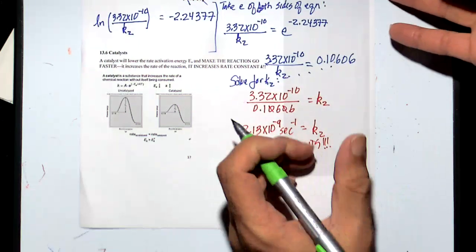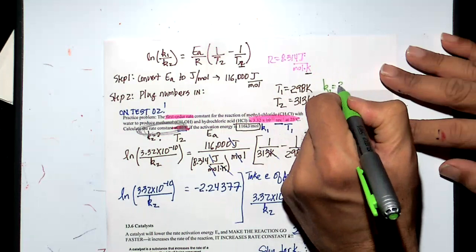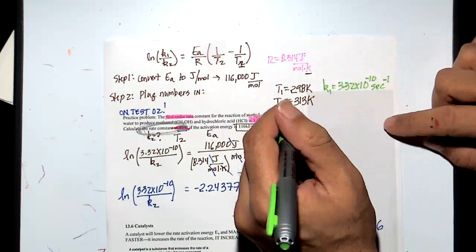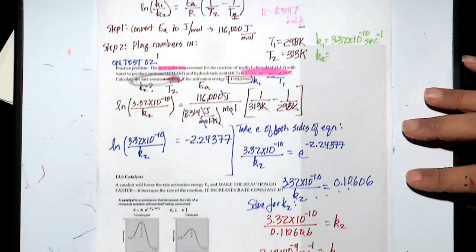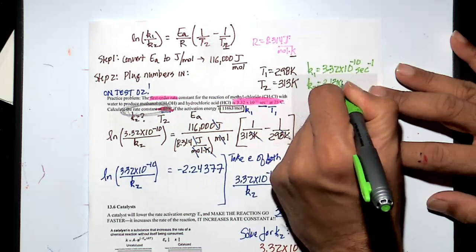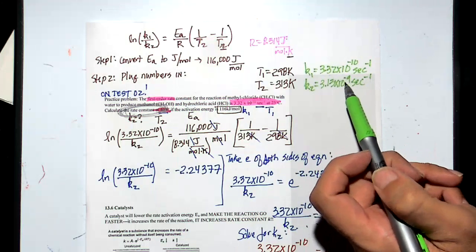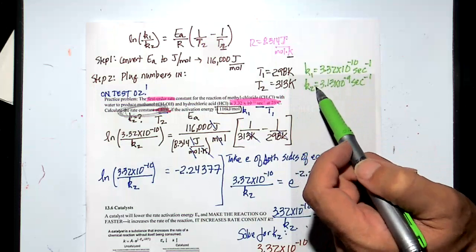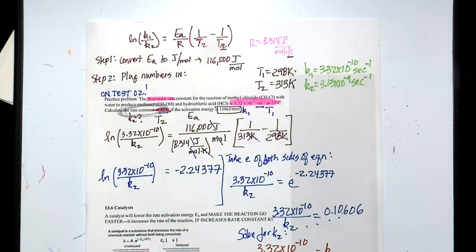Let's take an inventory: at T₁ (298 K), k₁ was 3.32 × 10⁻¹⁰ s⁻¹. We raised the temperature to T₂ (313 K) and calculated k₂ = 3.13 × 10⁻⁹ s⁻¹. The rate constant went up from 10⁻¹⁰ to 10⁻⁹ — that's about 10 times faster. When you raise the temperature from 298 K to 313 K, the reaction goes 10 times faster. Raise the temperature and the molecules just do it more — they get there faster.